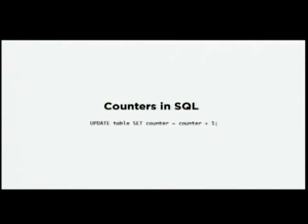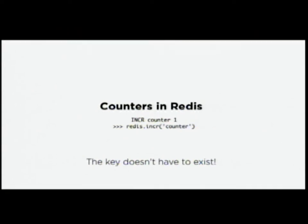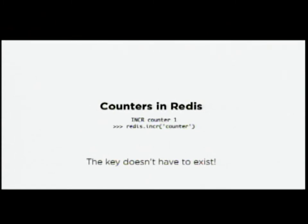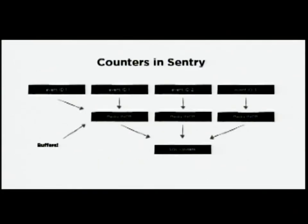In SQL, you simply say increment the counter by one — it's an atomic operation, you don't worry about race conditions. Redis is more or less exactly the same: just increment the counter by one. The reason I really like Redis is because you can call INCR on a key that doesn't exist, which is a huge performance benefit. With Memcache, you'd have to get the value first, then either set it or increment it — two network operations. Whereas Redis is just a single increment operation. In Sentry, events come in, go into a Redis counter via INCR, and eventually that gets flushed to the database. We use these as buffers — this is 100% of how Sentry scales its throughput.